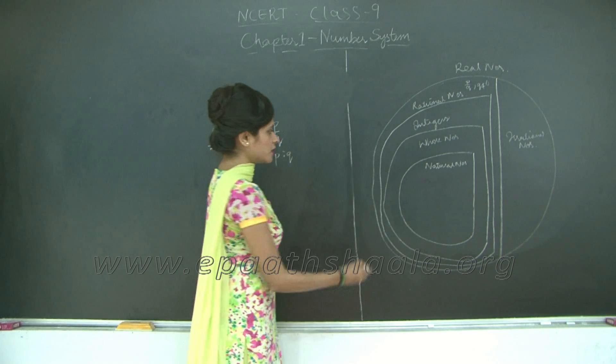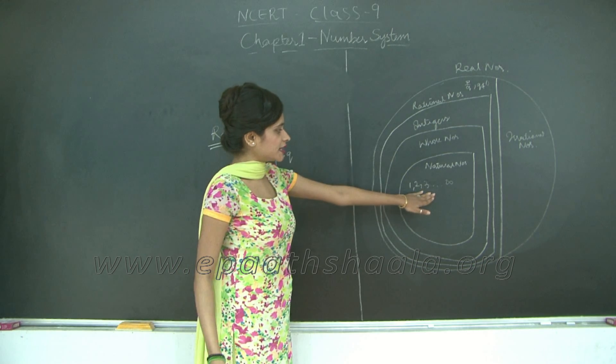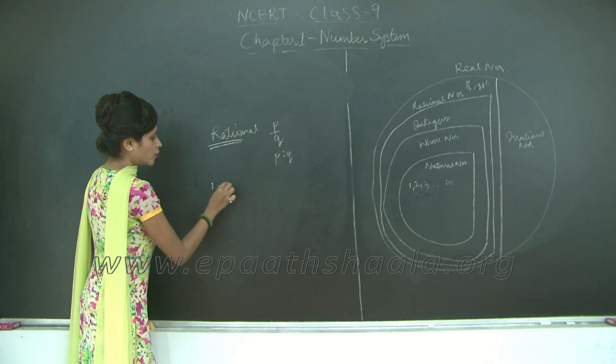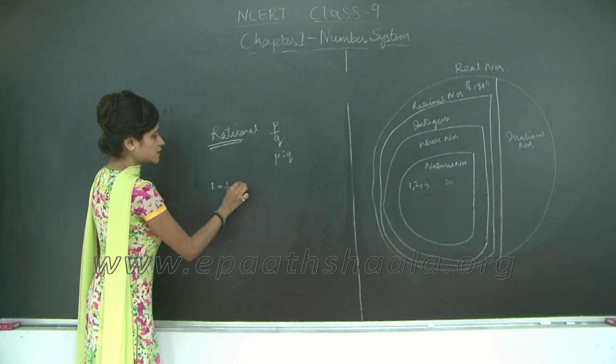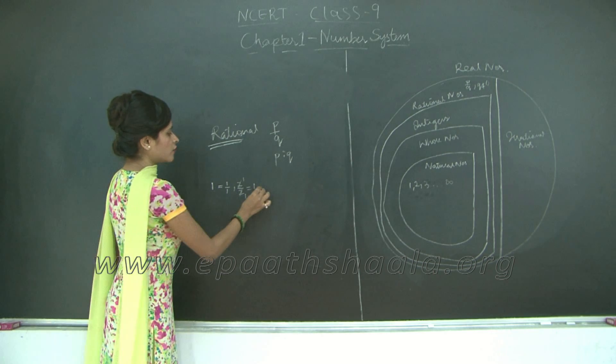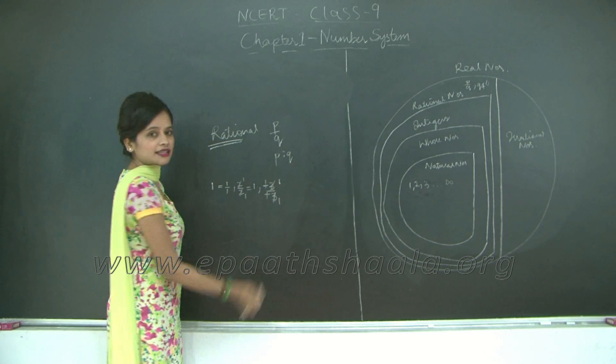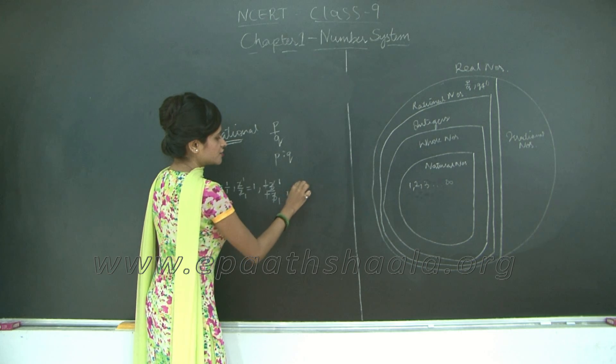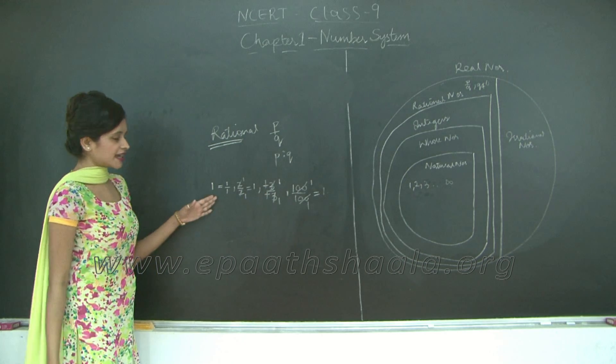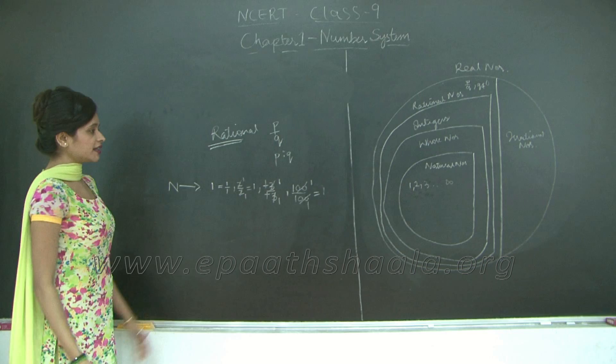Let's take for example natural numbers. I have numbers 1, 2, 3 up to infinity. So can we represent these numbers in the form of rational numbers? I will take 1 for example. 1 can be written as 1 upon 1, it can be written as 2 upon 2. 1 can also be written as minus 3 upon minus 3—so minus minus cancels, 3 ones are 3. Even we have 100 upon 100. So we have represented natural numbers in the form p upon q where q is not equal to 0.